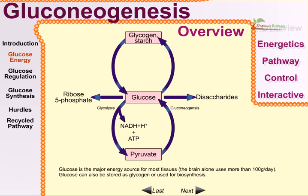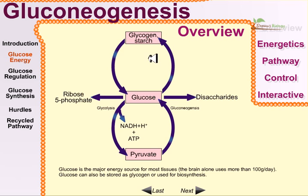Glucose is the major energy source for most tissues. The brain alone uses more than 100 grams of glucose per day — that is a huge amount. Considering all the other cells, you can imagine how much glucose we need daily to support life and keep our chemical pathways running. Glucose can also be stored as glycogen for use in biosynthesis — as starch in plants and as glycogen inside liver cells in animals.